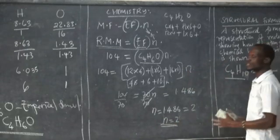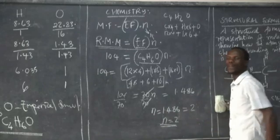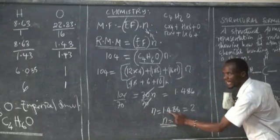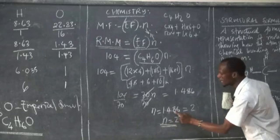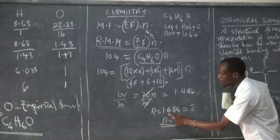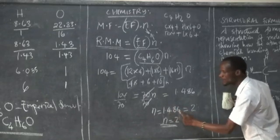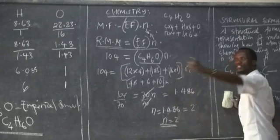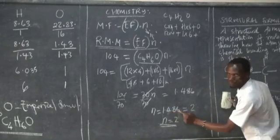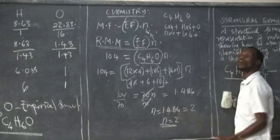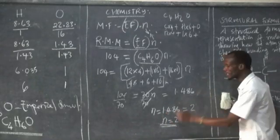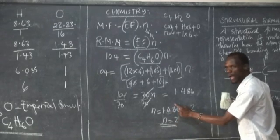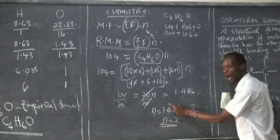Now, 1.486 must be converted to a whole number. A common misconception is that 1.4 is approximated as 1 — that is not correct. When approximating 1.486, you consider the digit after the 4, which is 8. Since 8 rounds up, the 4 becomes 5. Then 5 rounds up, so it becomes 2. Therefore, N equals 2. Approximation starts from the right-hand side of the number going to the left.